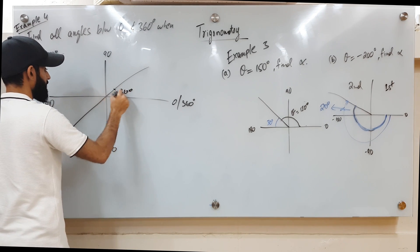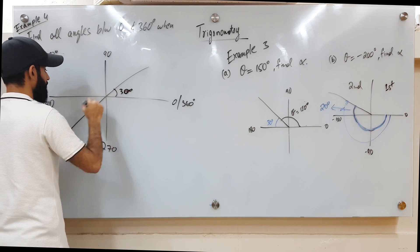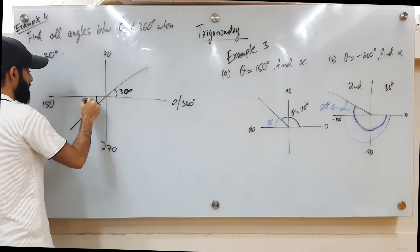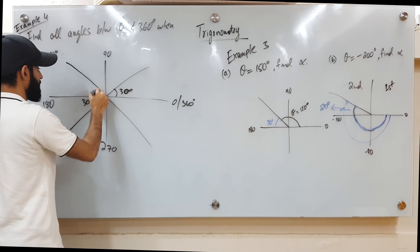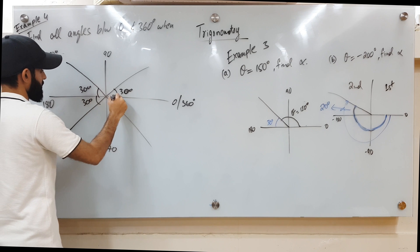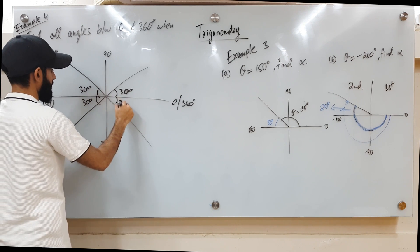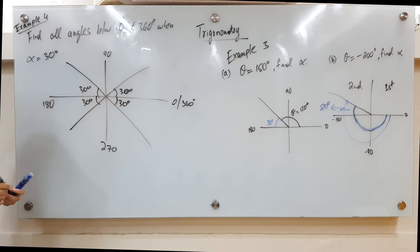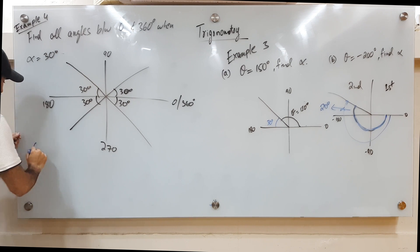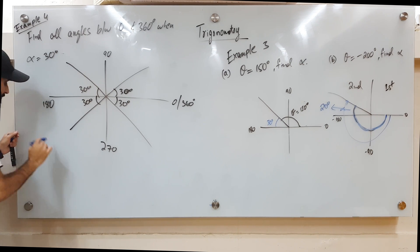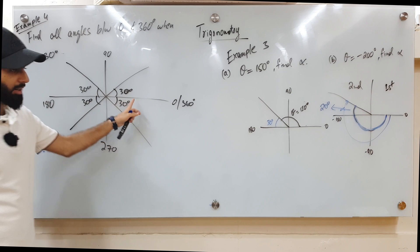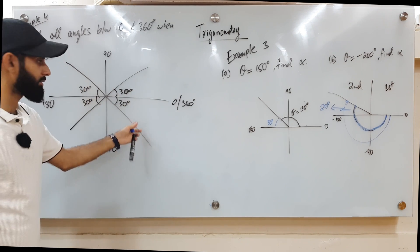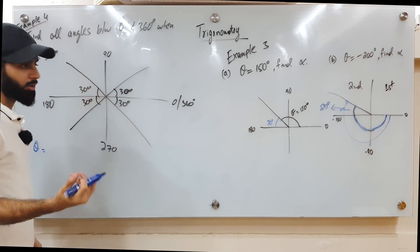This is going to be 30 degrees, this right here is also going to be equal to 30 degrees, and this is going to be 30 since it's alpha — I'm measuring it from the horizontal axis. Now I want to measure theta. How many values of theta am I going to have? Four, because we have alpha in all four quadrants.